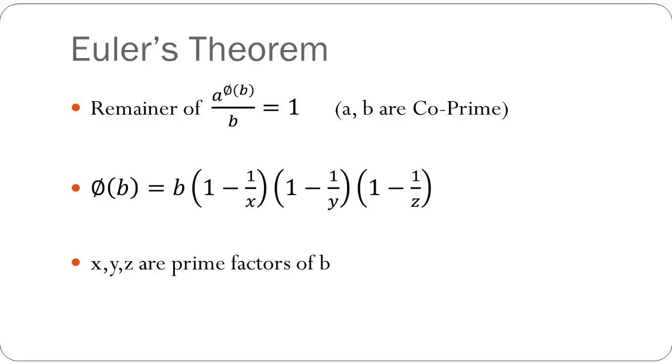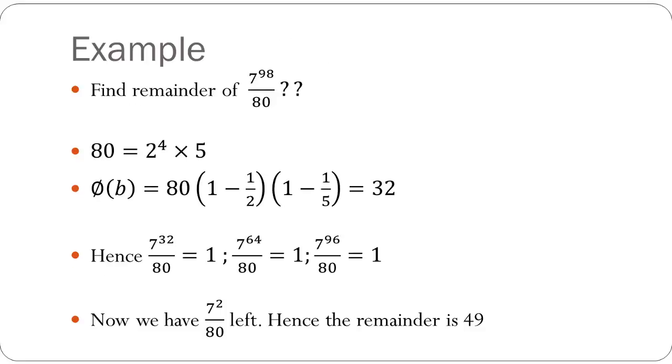So let's look at a few examples. Suppose you are asked to find the remainder of 7 raised to 98 upon 80. Now our first step is to check whether 7 and 80 are co-prime with respect to each other. Yes they are. And 80 can be written as 2 raised to 4 times 5, which is the prime factorized form of 80. Hence the prime factors of 80 are 2 and 5.